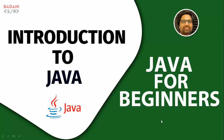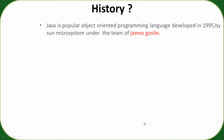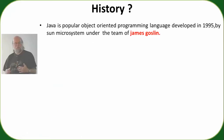As we know, Java is a very popular programming language and an object-oriented programming language, which James Gosling built in 1995 under a company called Sun Microsystems.